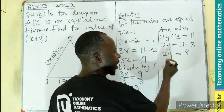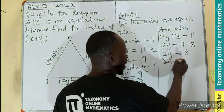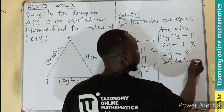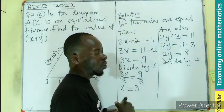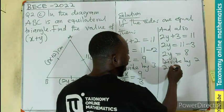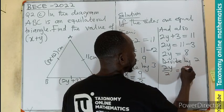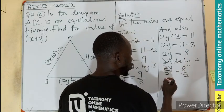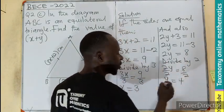We need the Y to be alone. So we divide by the 2, which is the coefficient of the Y. So 2Y divided by 2, 8 divided by 2, will make Y equal to 4.